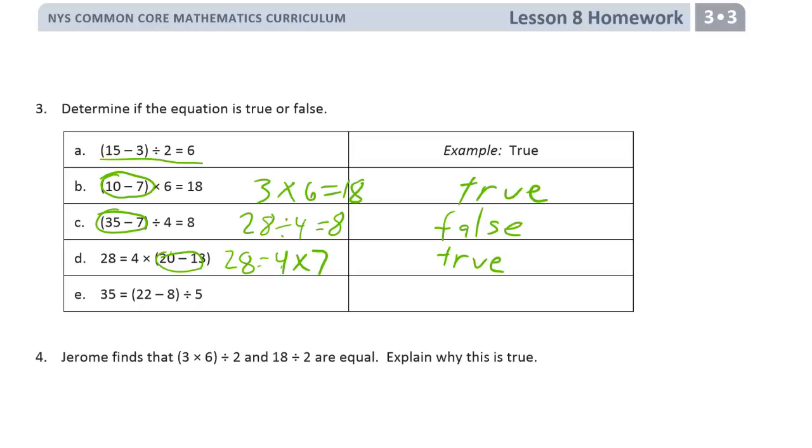And you can see that these are just figuring out. That's 22 minus 8. That's 14. 14 divided by 5. 25 is not 35. So that's false.